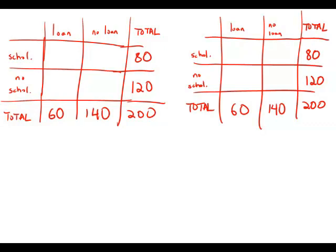So statement number one by itself, 25% of those surveyed said they had scholarships but no loans. So 25% of those surveyed, that would be 50. These people had a scholarship and no loan. Well, if we're able to figure out one box in here,